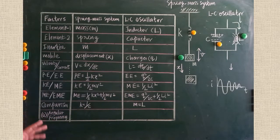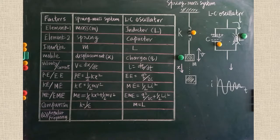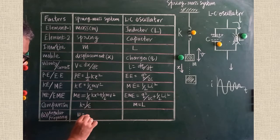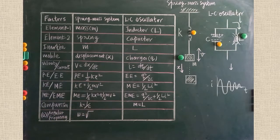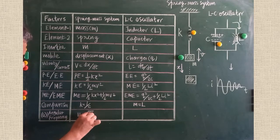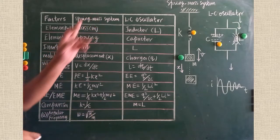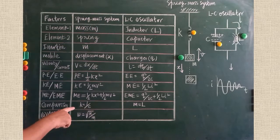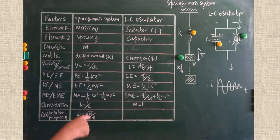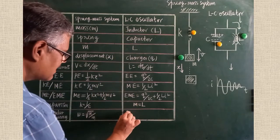Finally, we calculate the angular frequency. From previous chapters, the omega formula for the spring-mass system is ω = √(k/m). We know the analogous values of k and m. So substituting into this formula, instead of k and m, we substitute the LC oscillator equivalents to get omega for the LC oscillator system.